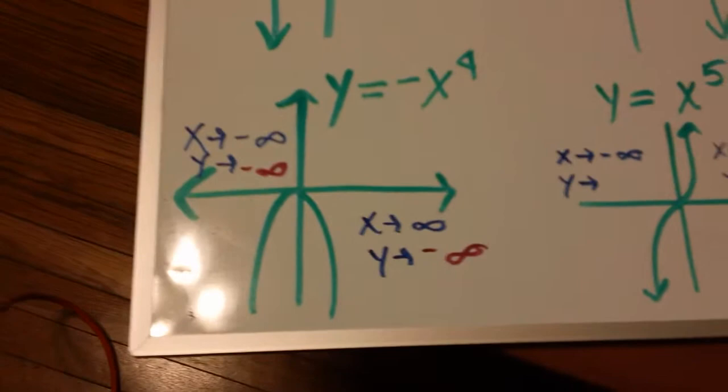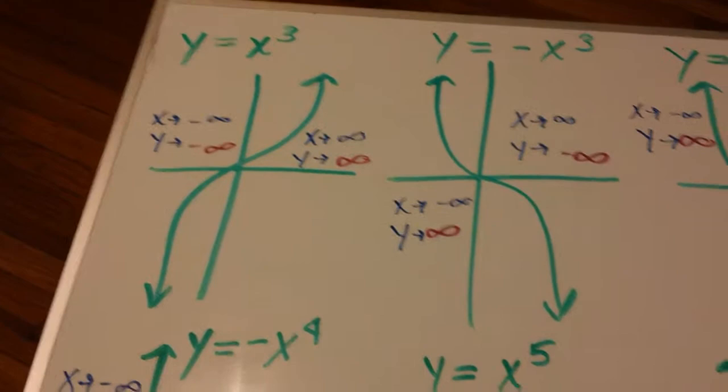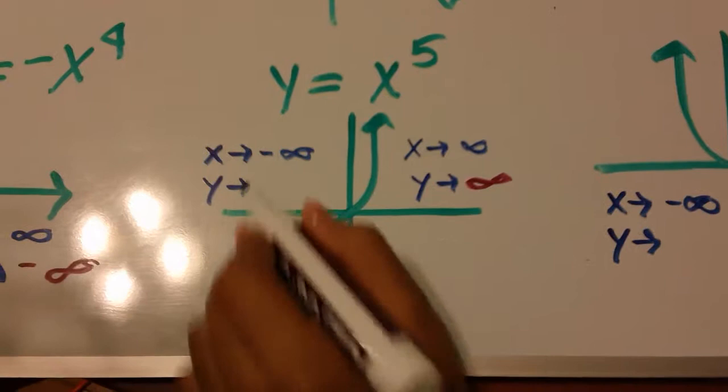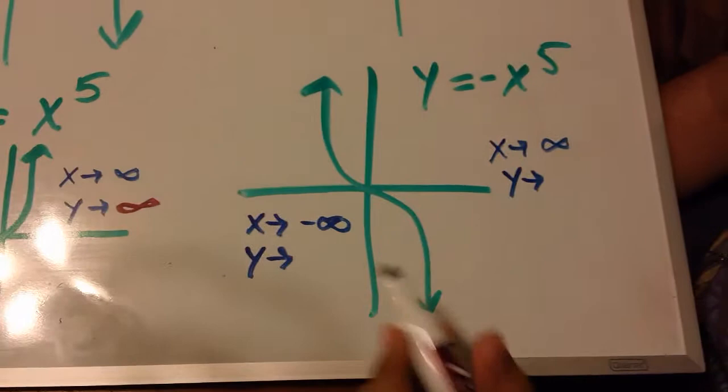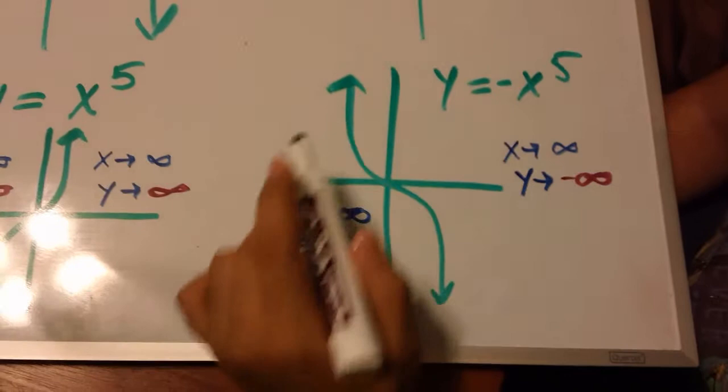Here, just exactly like the cubic functions, if it's positive, if the x's are positive, the y's are positive. If the x's are negative, the y's are negative. And this one, as the x's are positive, the y's are negative. As the x's are getting smaller, our y's are getting positive.